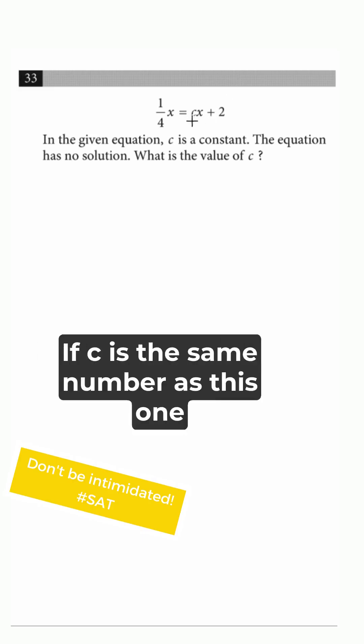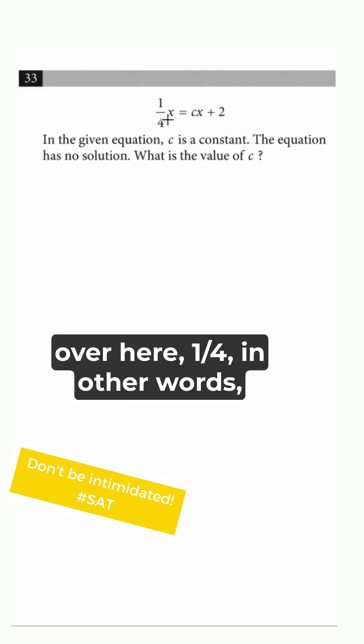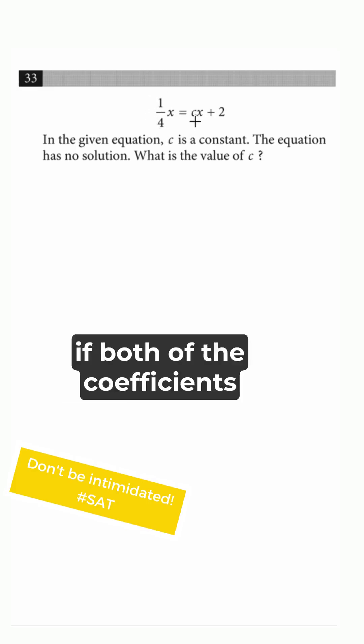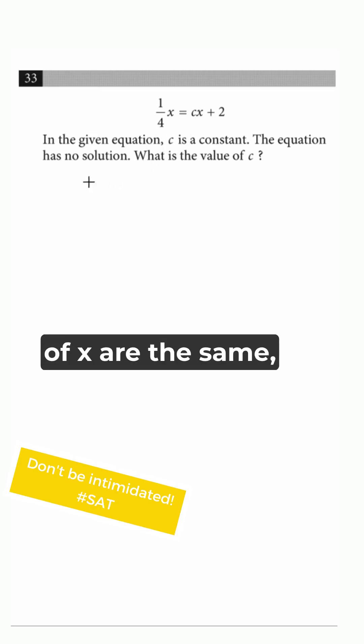So guess what? If c is the same number as this one over here, 1 fourth, in other words, if both of the coefficients of x are the same, we're going to get 1 fourth x equals 1 fourth x plus 2.